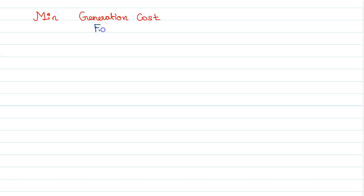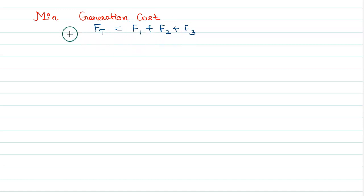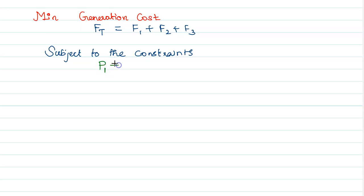Now we are going to formulate the complete problem. Our objective is to minimize the generation cost, which equals the summation of individual generation costs of the three generating units. F1, F2, F3 are second order equations which make the objective function non-linear in nature. Subject to the constraint that total generation equals load demand: P1 plus P2 plus P3 equals P-load.